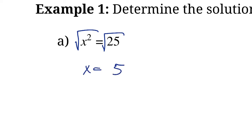Careful. Remember, whenever we take the square root of both sides, we have to consider the positive and the negative case, because negative 5 squared also equals 25. So these are the two solutions to this problem: positive and negative 5. Okay, pretty straightforward.